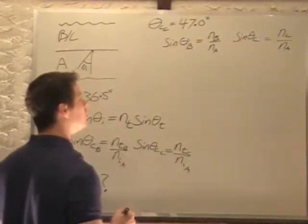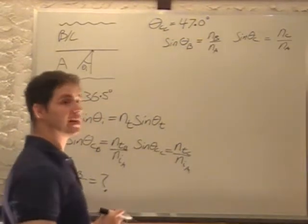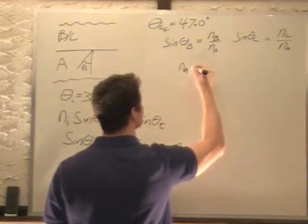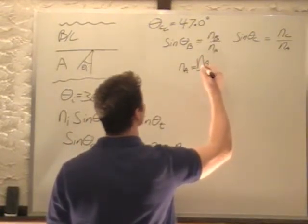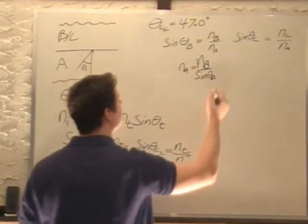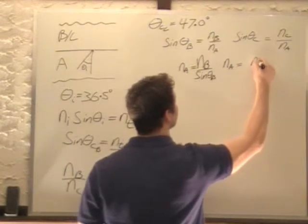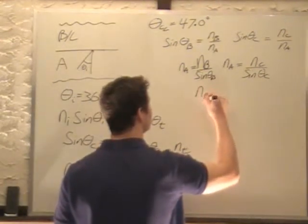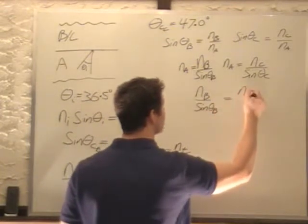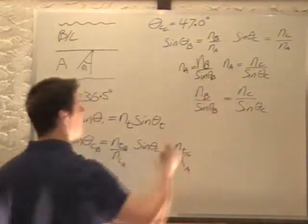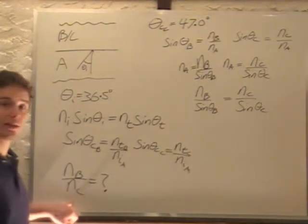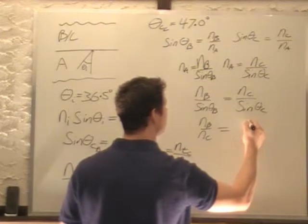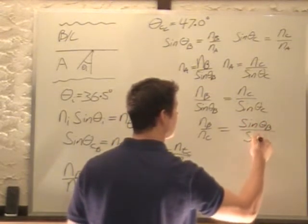I don't really care what the index of refraction of A is because I don't need it. So I'll solve for n_A in both these cases and set them equal to each other. n_A equals n_B over sin(theta_B), and n_A equals n_C over sin(theta_C). Now set these equal to each other: n_B over sin(theta_B) equals n_C over sin(theta_C). I want n_B over n_C, so n_B over n_C equals sin(theta_B) over sin(theta_C).